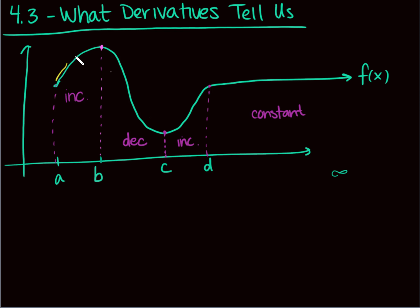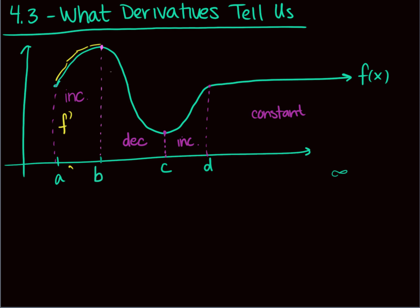If I draw some tangent lines, what do you notice about all of these yellow tangent lines? They all have positive slope — they're all sloped upward. We have a positive change in y for a positive change in x as we go left to right. So in this interval, f prime is greater than zero — it's positive.